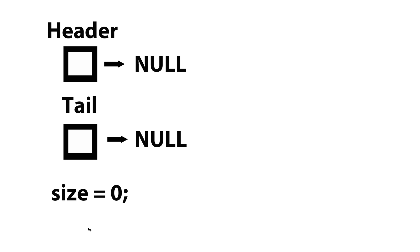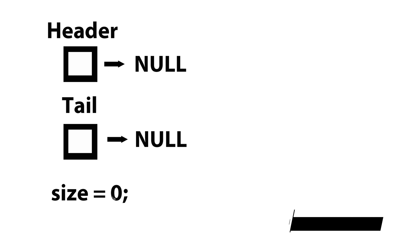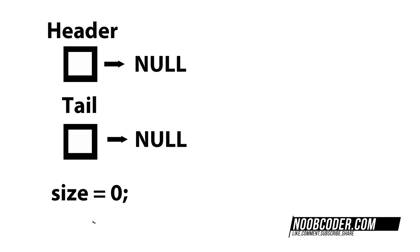Right now we have our three properties: we have our header, our tail, and size. These all get set when we call our default constructor for our linked list. Header gets set to null, tail gets set to null, and size equals zero.